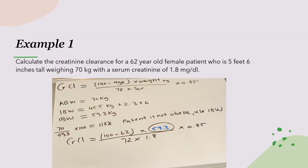Let's look at a practice problem together. Calculate the creatinine clearance for a 62-year-old female patient who is 5 feet 6 inches tall, weighing 70 kilograms, with a serum creatinine of 1.8. We'll use the Cockcroft-Gault equation: 140 minus age, times weight, divided by 72 times serum creatinine — and remember, it's a female patient, so we multiply by 0.85 at the end.